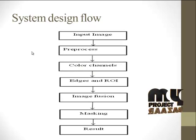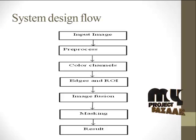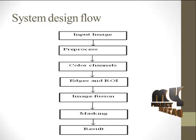This is the system flow of our design. Initially, we take input eye images, which are scanned and stored in our database. The images are pre-processed by noise removal using a filter, and the color channels are split into red, green, and blue so that each channel can be processed individually. From the corresponding channels, we select particular channels and perform edge detection and ROI extraction. These are then fused with the images, and finally the fused image is masked with the original image to obtain the segmented identified result.